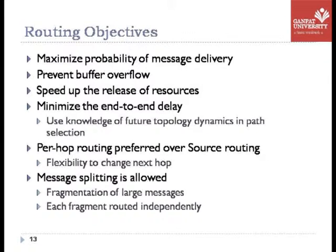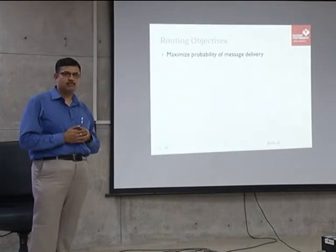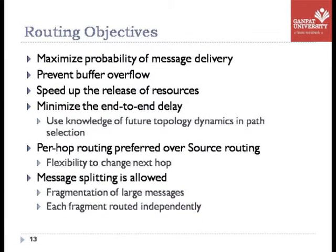When improving routing protocol performance, the objectives are: first, maximize the probability of delivery — that is the foremost objective for any available network. Second, prevent buffer overflow, because when the buffer overflows it starts dropping packets, degrading network performance and requiring retransmission. Third, speed up the release of shared resources. Fourth, minimize end-to-end delay.